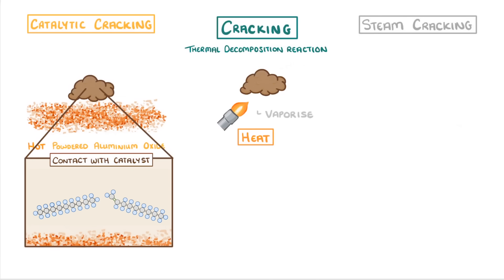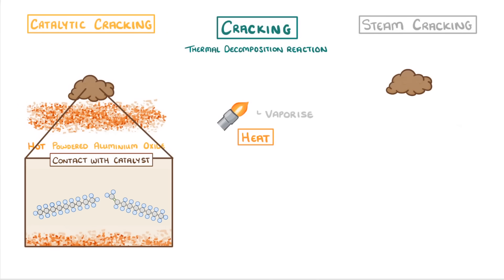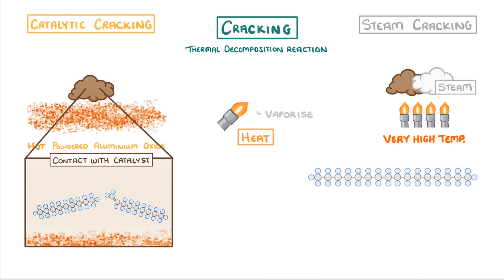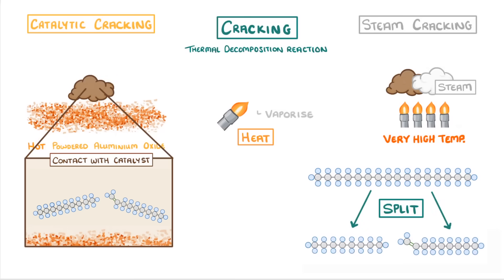On the other hand, for steam cracking, once we've vaporised our hydrocarbons, we mix them with steam and then we heat them to a very high temperature, which again causes the long hydrocarbon chains to split apart into shorter ones.